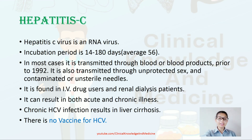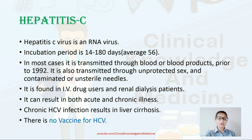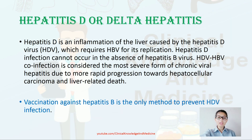Hepatitis C is also an RNA virus with an incubation period of 14 to 180 days. In most cases it is transmitted through blood or blood products, and prior to 1992 also through unprotected sex and contaminated or unsterile needles. It is found in IV drug users and renal dialysis patients. It can result in both acute and chronic illness; chronic hepatitis C can lead to liver cirrhosis, and there is no vaccine for HCV.